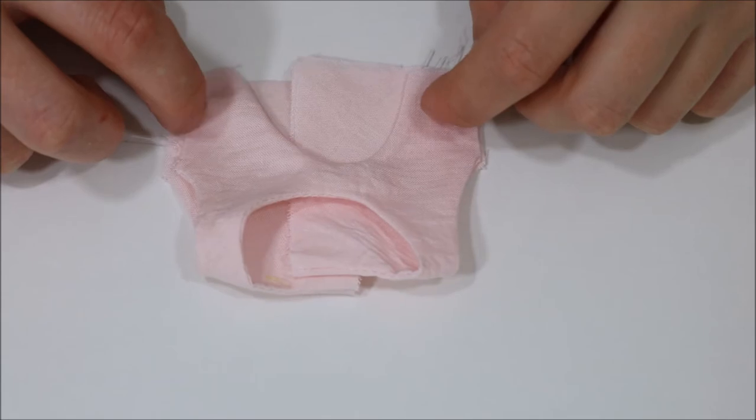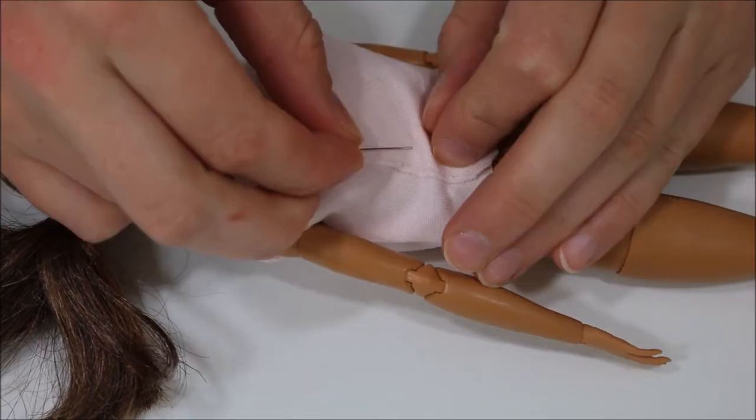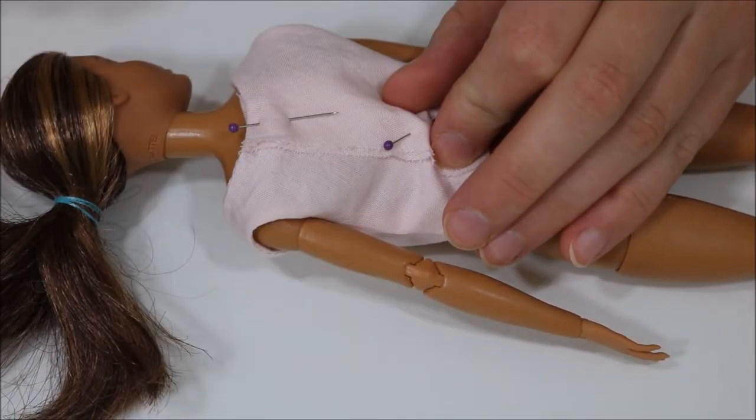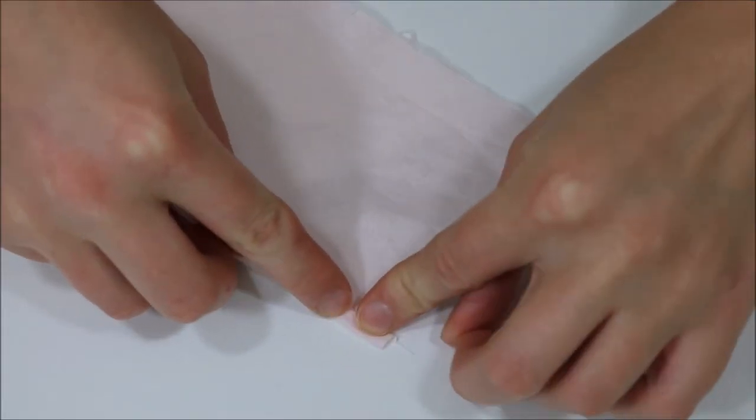After that I iron it, as you can see it makes a world of difference and then sew the side seams. Next I just measured it to make sure it still fit and then cut a rectangle for the skirt.